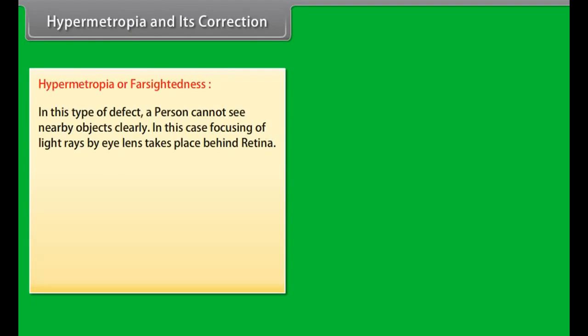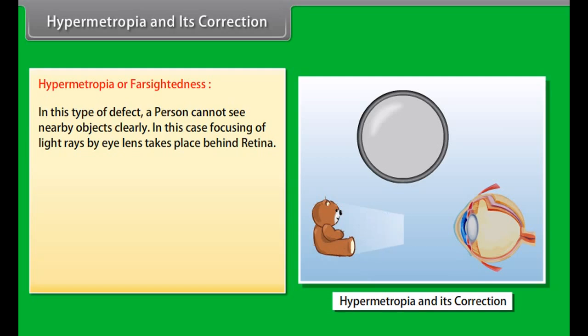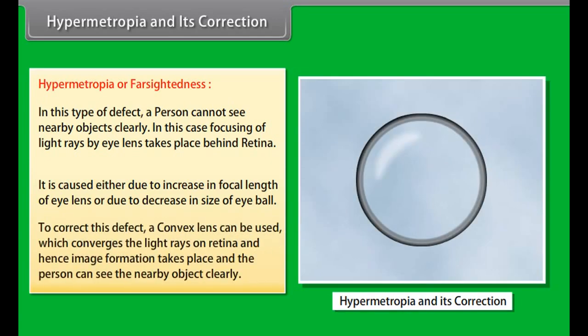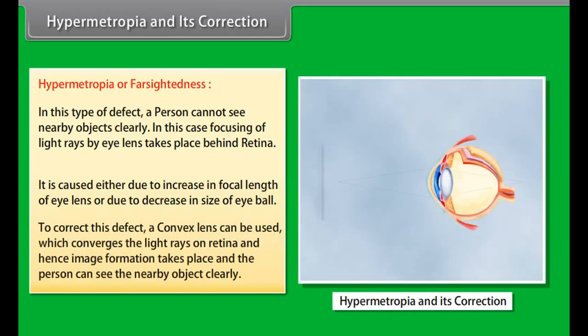Hypermetropia: In this type of defect, a person cannot see nearby objects clearly. In this case, focusing of light rays by eye lens takes place behind retina. It is caused either due to increase in focal length of eye lens or due to decrease in size of eyeball. To correct this defect, a convex lens can be used which converges the light rays on retina and hence image formation takes place and the person can see the nearby object clearly.